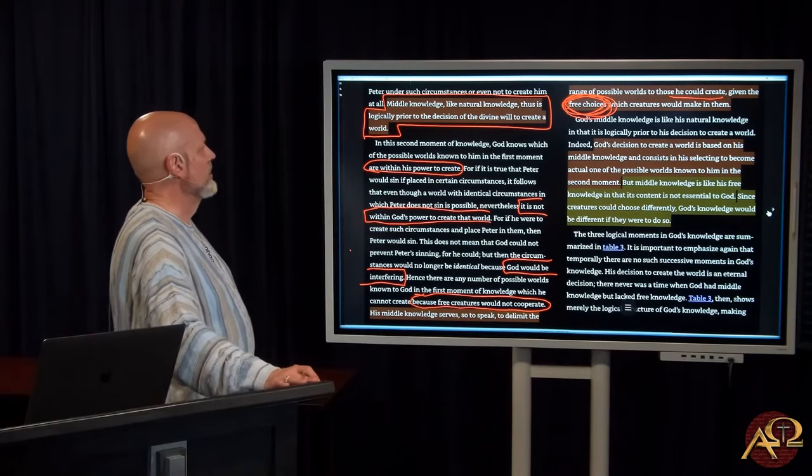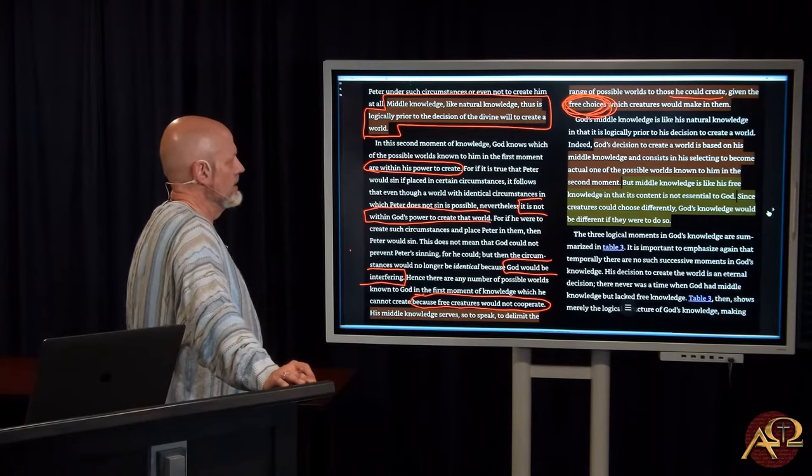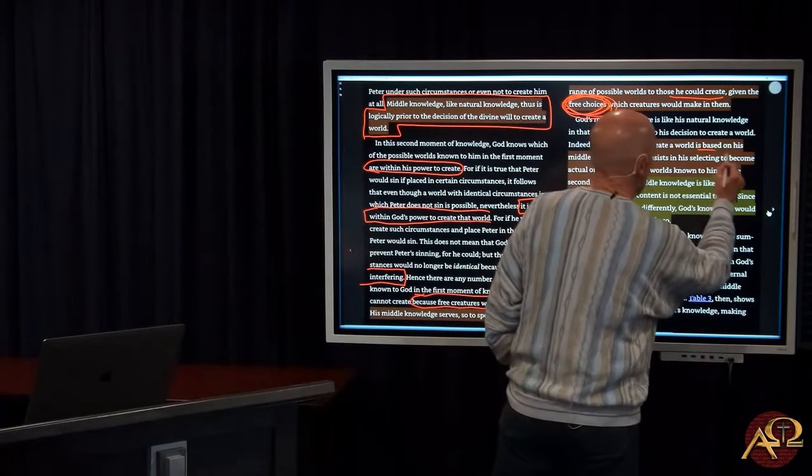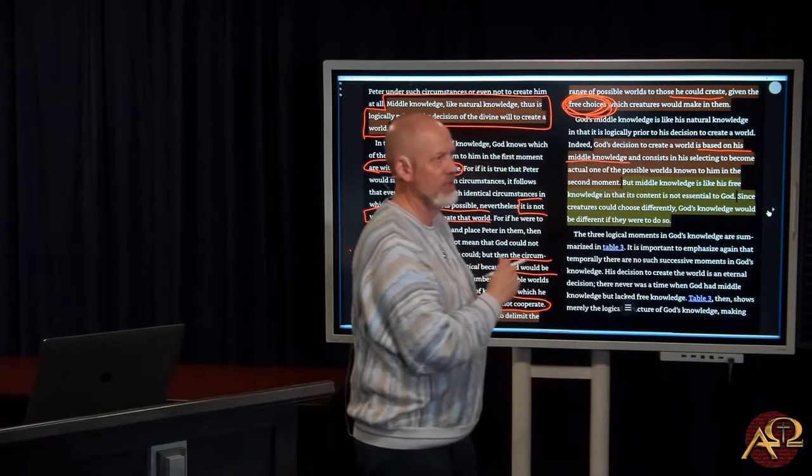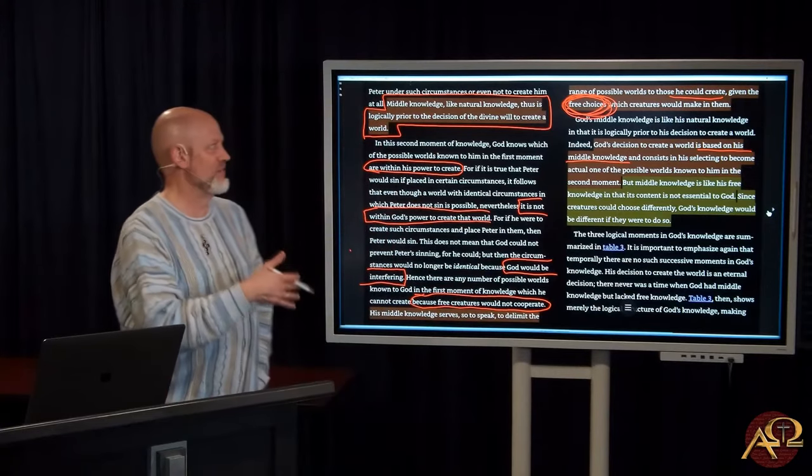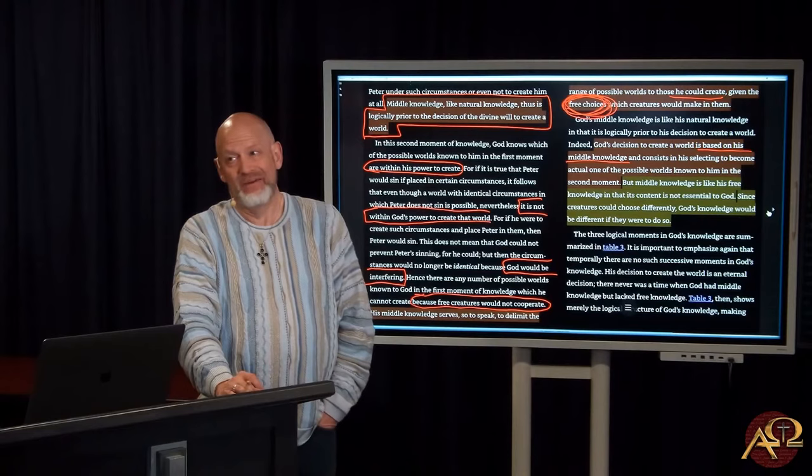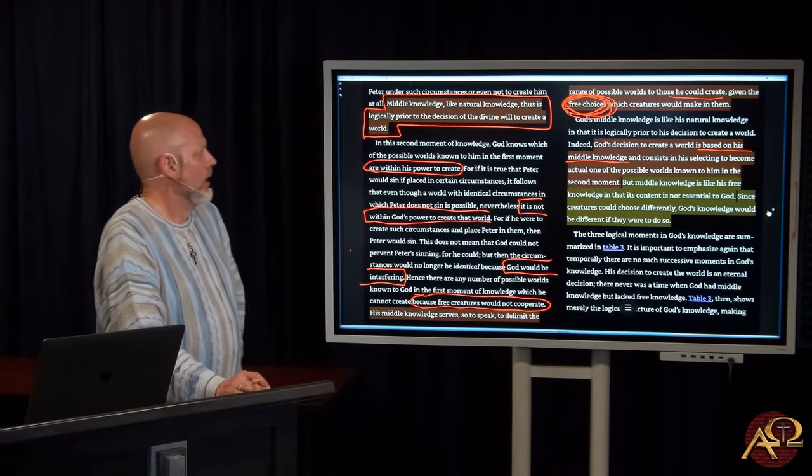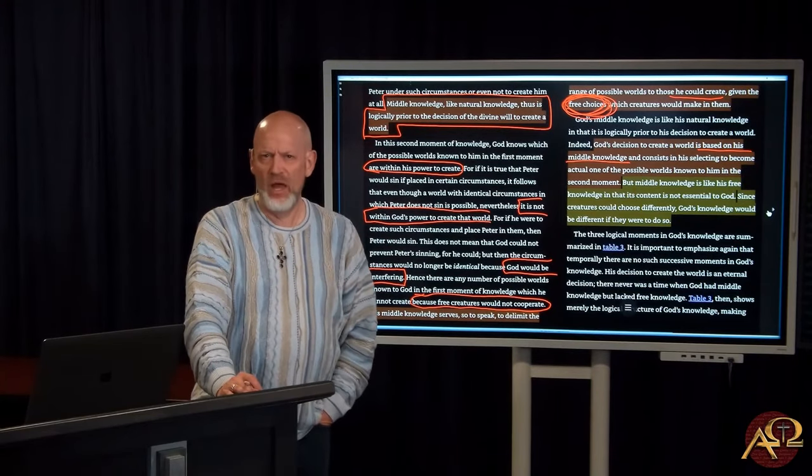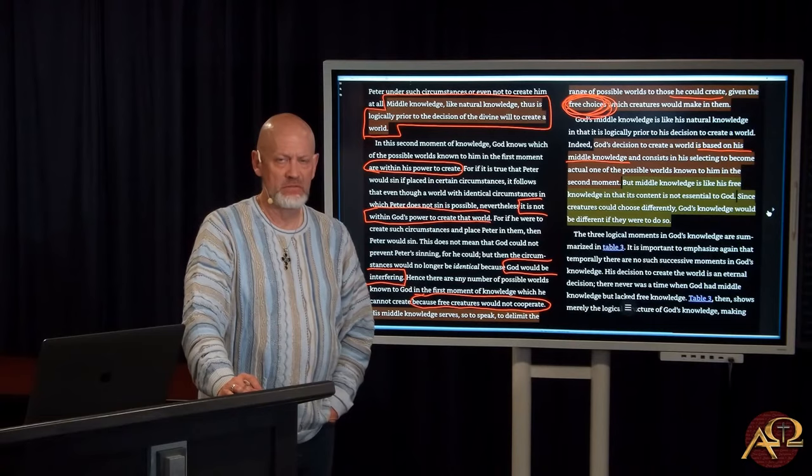God's middle knowledge is like his natural knowledge in that it is logically prior to his decision to create a world. Indeed, God's decision to create a world is based on his middle knowledge. This is how important middle knowledge is. Think about this: for the majority of the history of the Christian church, the very basis of God's decision to create a world—which by the way, I just want to point out is really not biblical language, but we had no idea. Somehow no one figured this out. May I suggest why? Because no one reading the Bible would ever come up with this.